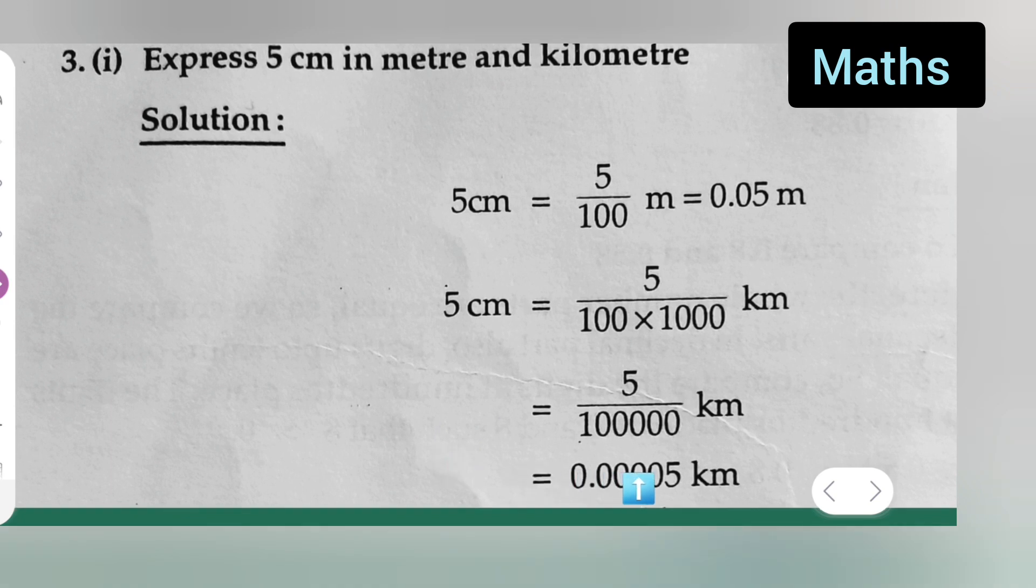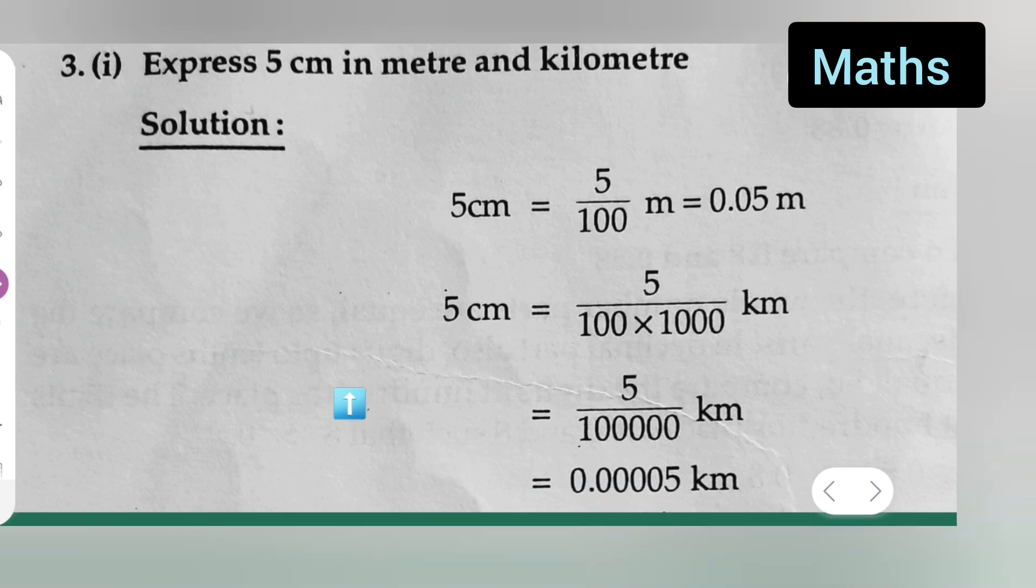Now this is equal to 0.00005 kilometer. In place of 5, the decimal point. So I hope you all have understood.